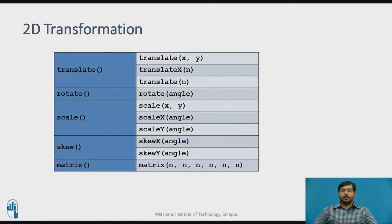The translate function, we can use translate(x, y), that is one of the functions taking two values of x-axis and y-axis. Then translateX, that is when you only want to change the x-axis of the given element and the number. Similarly, the third one is translateY, that is translateY(n).